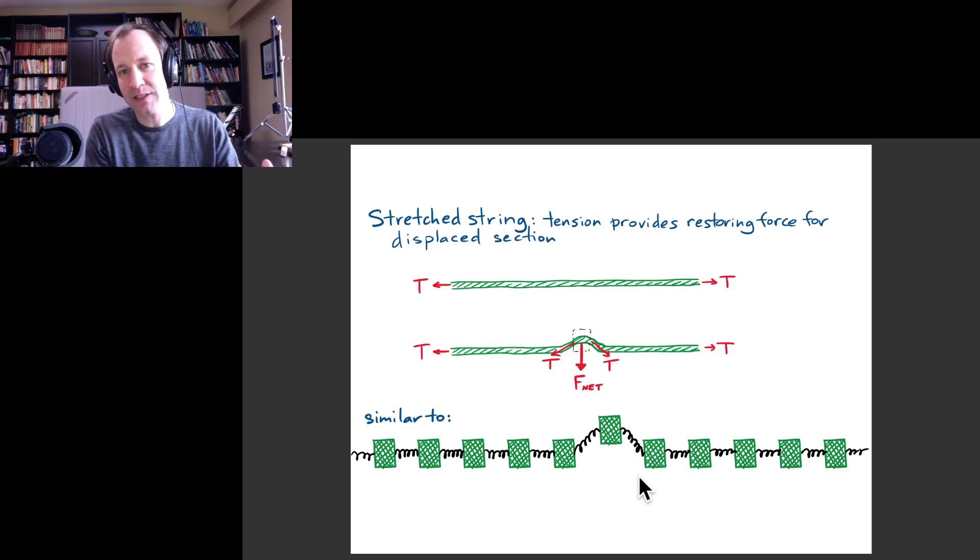The energy that you originally supplied is transferred to the other masses in the chain, and so eventually that first mass will just go back to its equilibrium position. Then we understood that this was a very good model of something like a stretched string, like a guitar string.